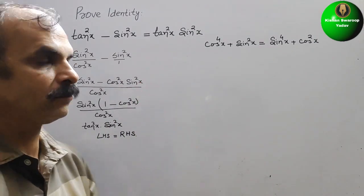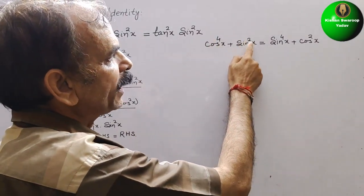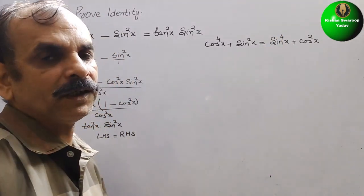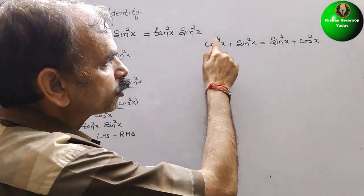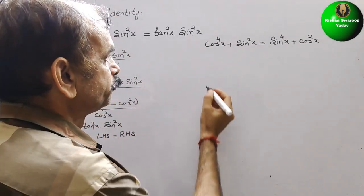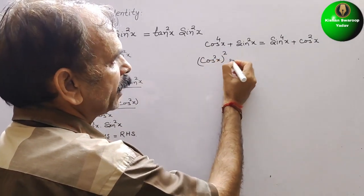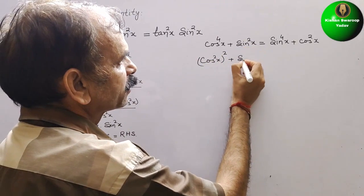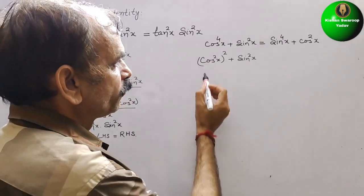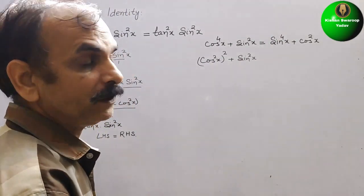Now comes the second identity. Here they have given cos to the power 4x plus cos square x times sin square x. We will convert it by writing cos to the power 4x as cos square x whole square. So it becomes cos square x whole square plus sin square x times cos square x. Now cos square x is 1 minus sin square x, so we write that.